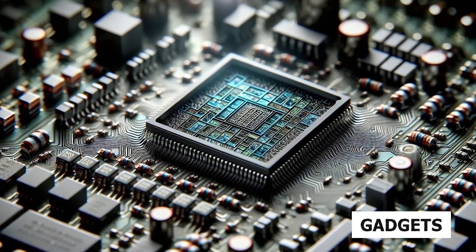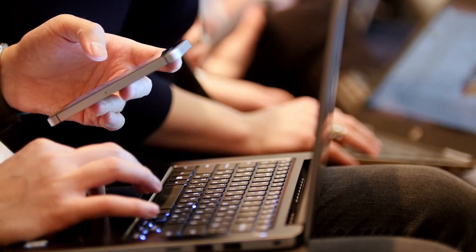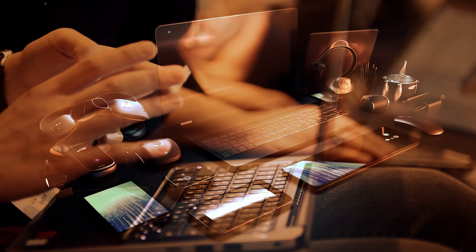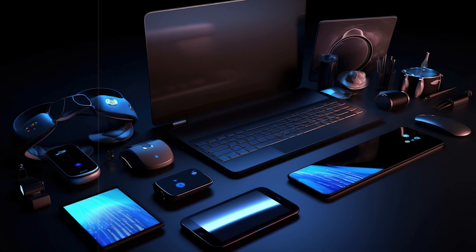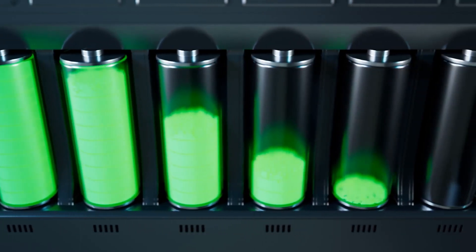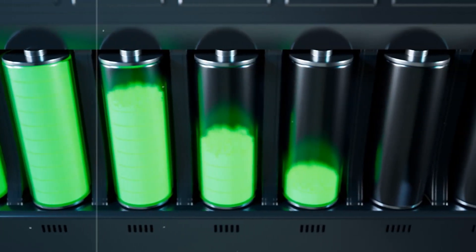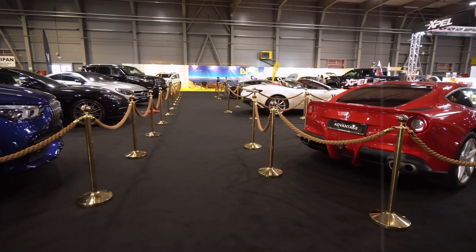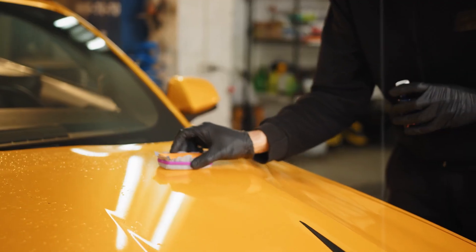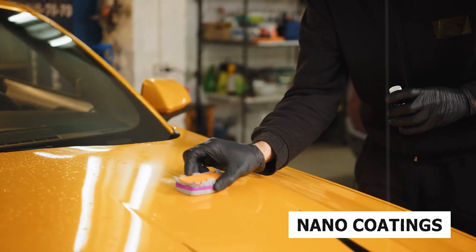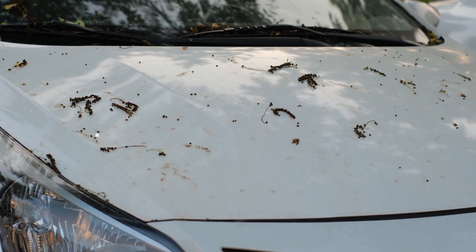Now, on to our gadgets. Our phones and laptops are getting a significant boost from nanotech. We're talking about speedier devices with batteries that keep us going longer. But it's not just about staying powered up or dry. Even our cars are getting the nano treatment. Special nano coatings keep cars shiny and new by fighting off scratches and rust.